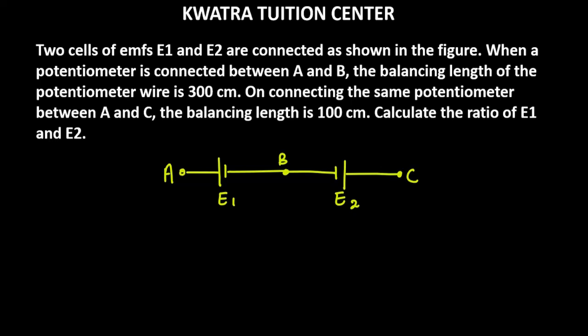The potential difference across A and B is 300 cm. We have to deal with potential difference here, difference between A and B, so it is about E1 only.